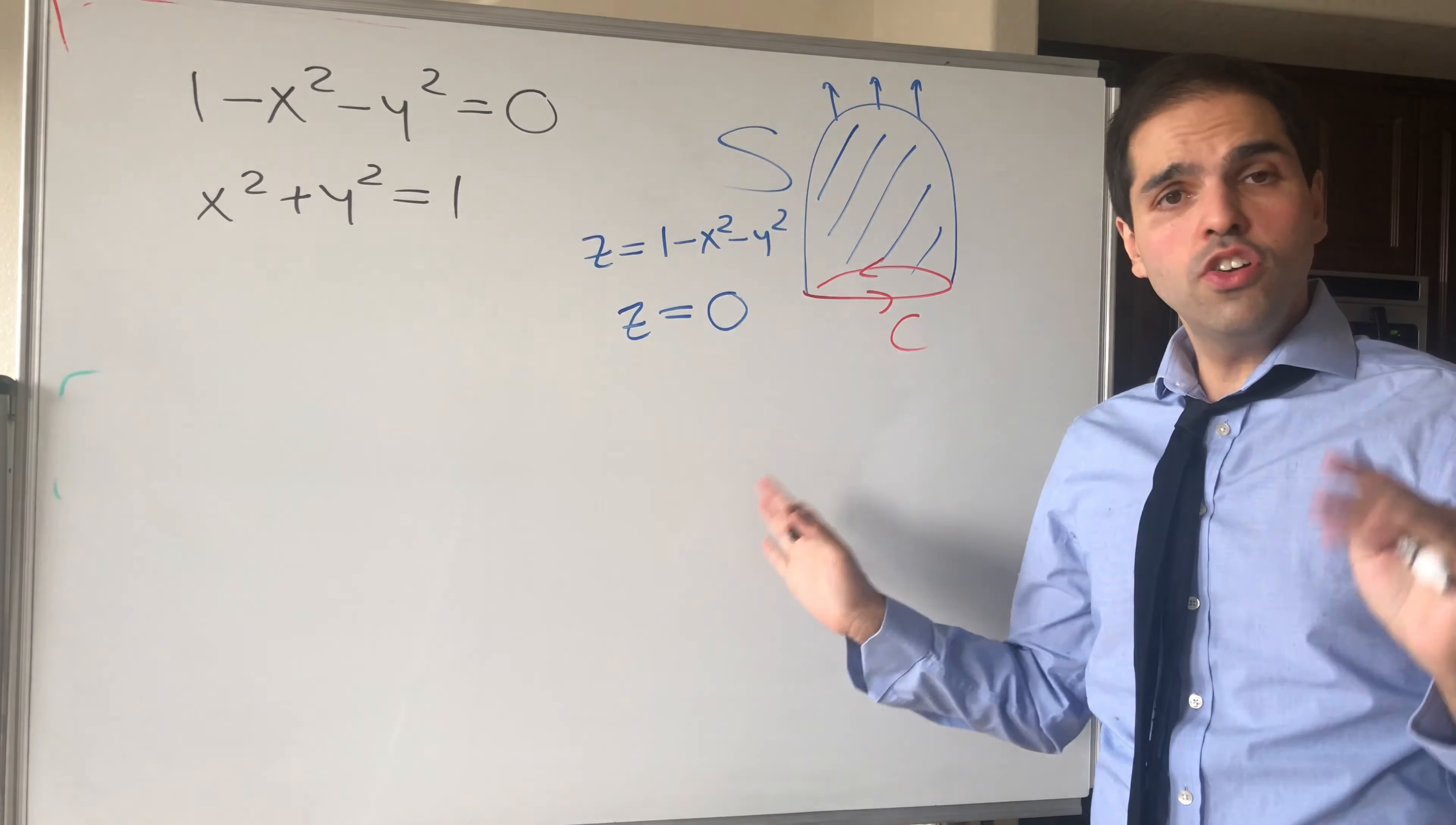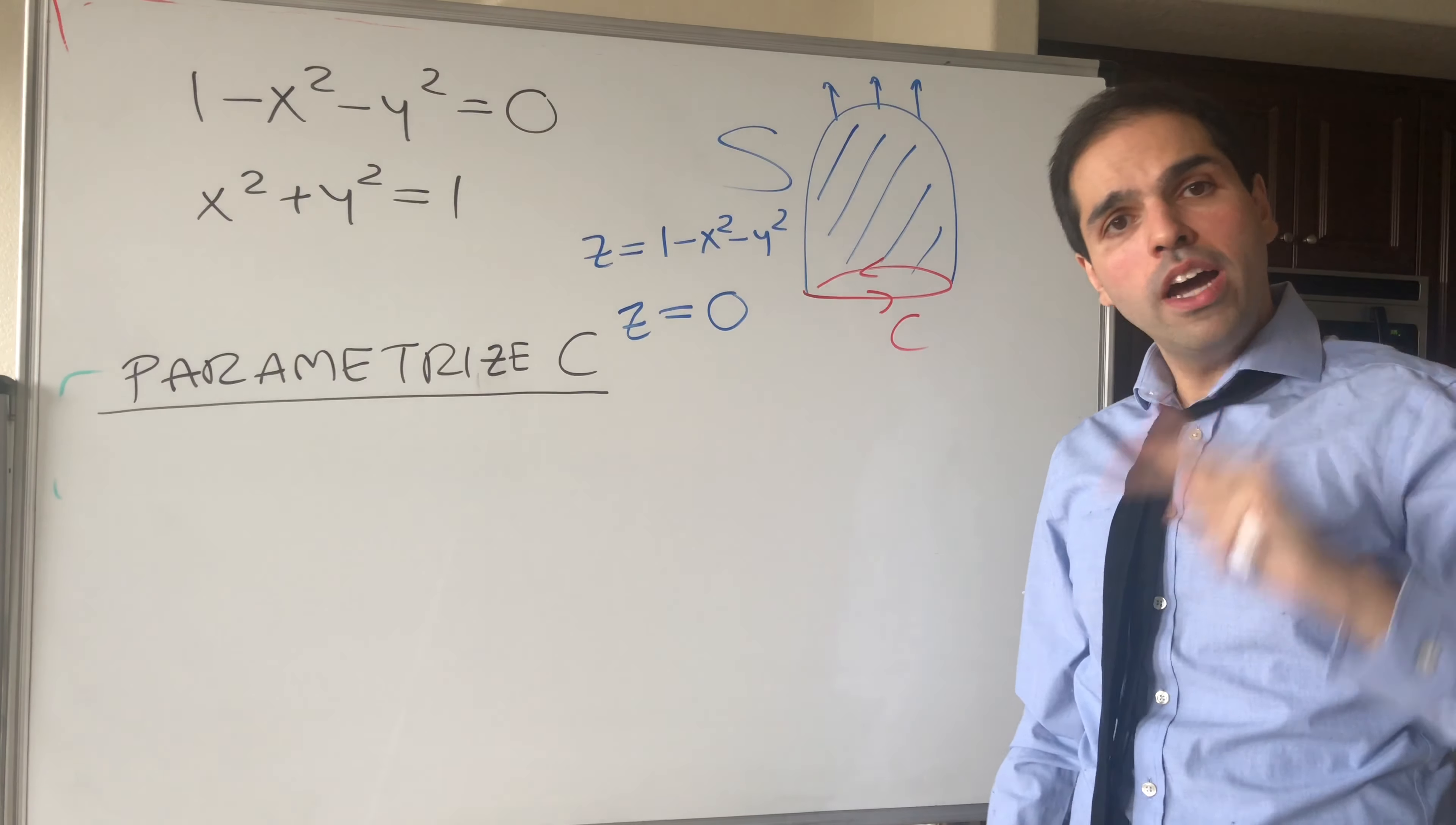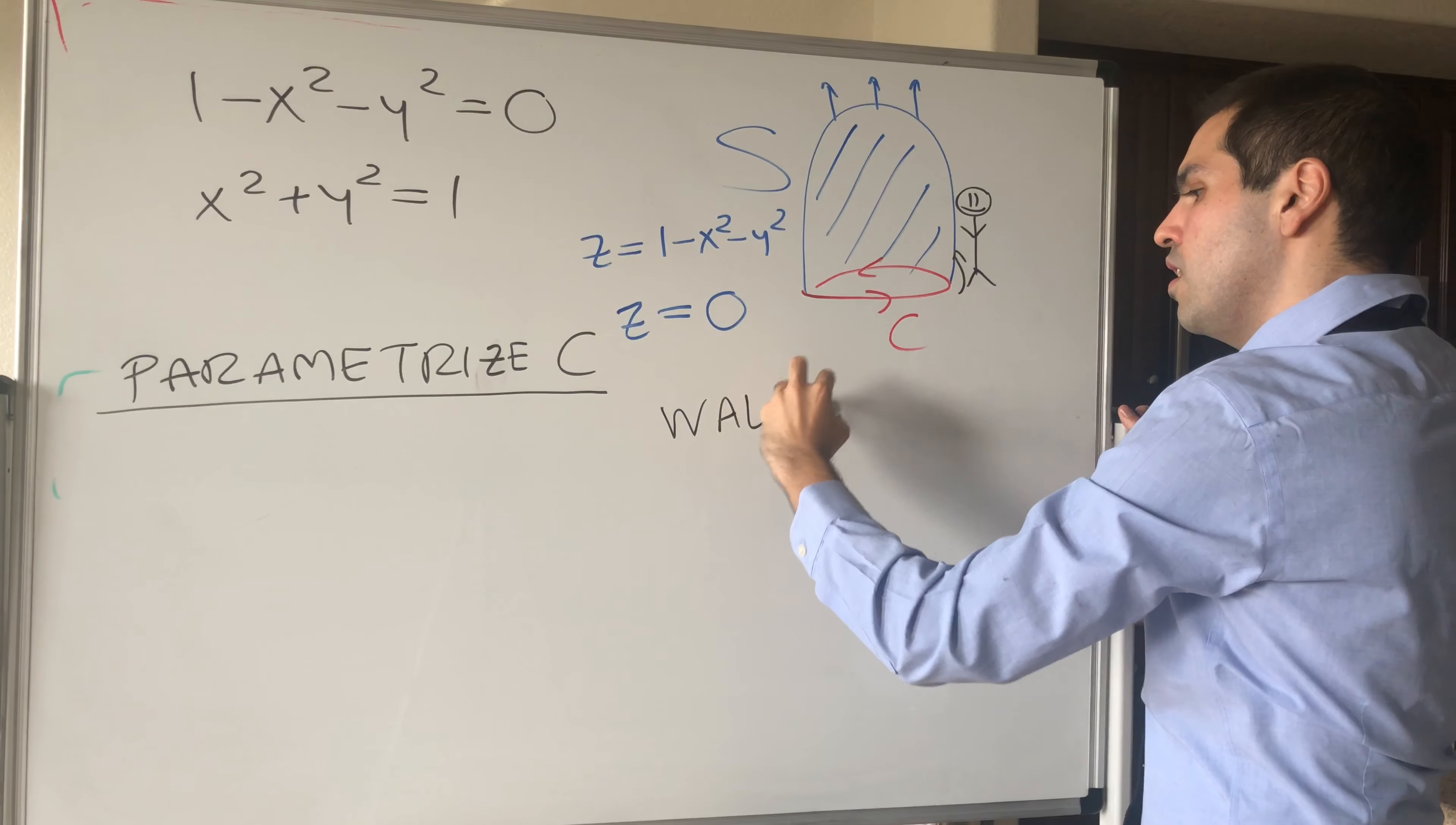Now, the question is, how do we parameterize C? And here you have to be very careful, because the orientations need to match. Namely, we know already that S is oriented upwards. And now, for C, we have two choices. Is it clockwise or is it counterclockwise? Well, and as I said, make sure the orientations match. And the way you can check for this is simply as follows. If you're a person walking on this curve, make sure that when you're walking, your surface, which you can think of as a mountain, is to the left. And in particular, here's a nice mnemonic: always walk left.